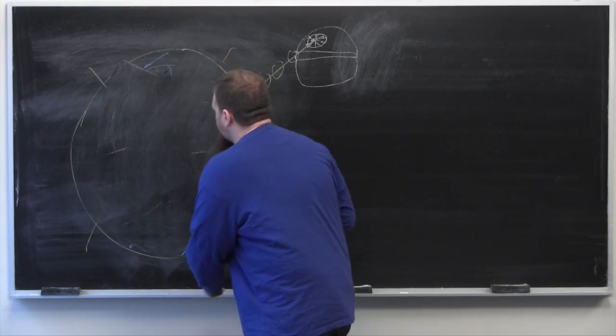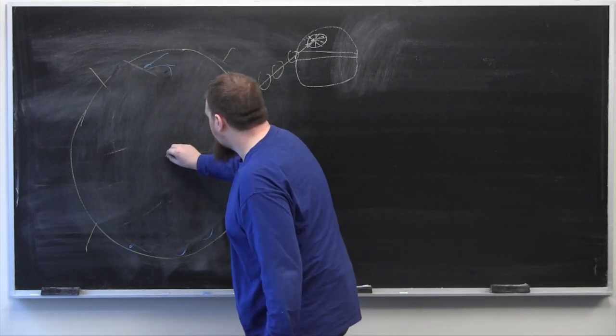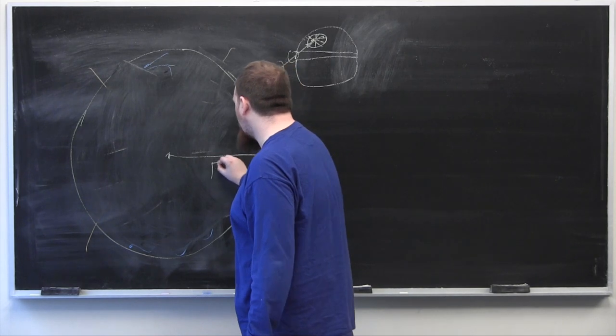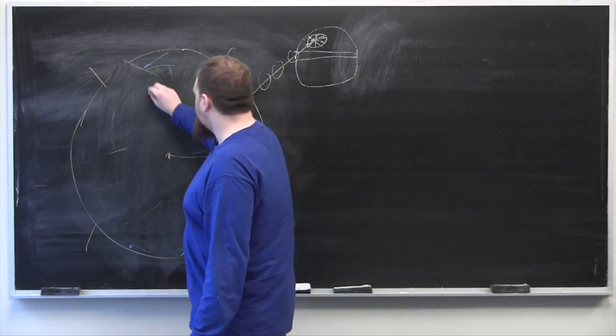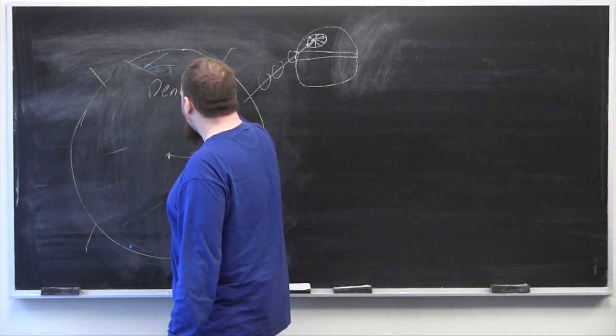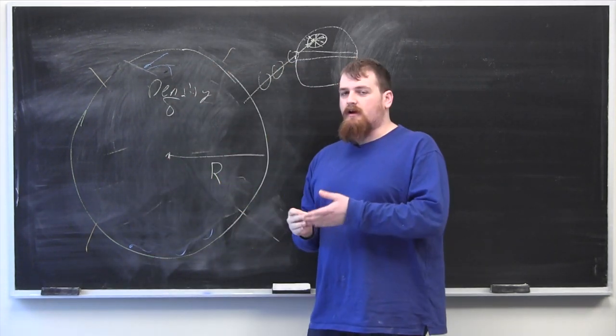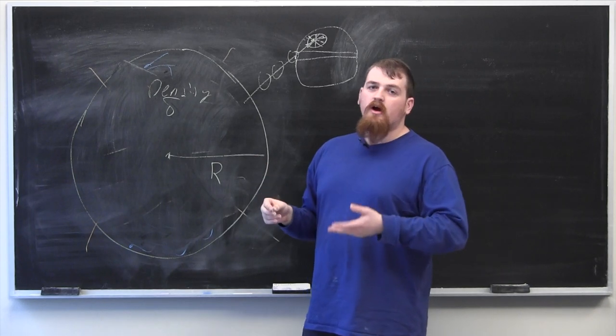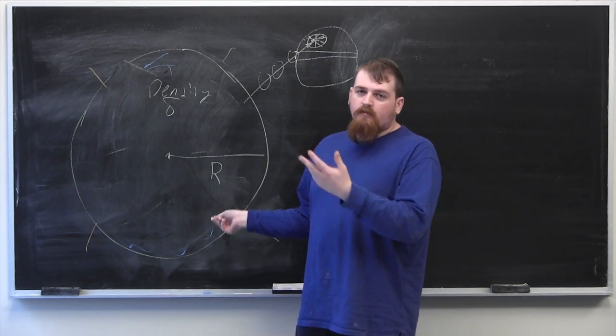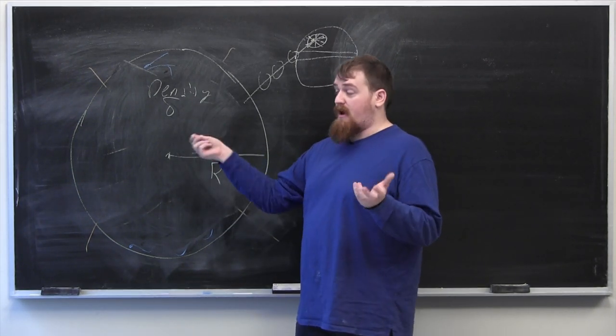So let's start by saying that planet Alderaan has radius capital R and density delta in some number of kilograms per meter cubed. We'll put numbers to these later, but right now we can just use variables for the mathematical part of it.